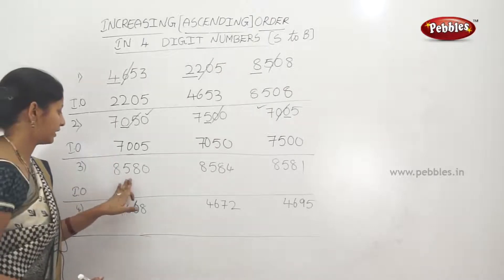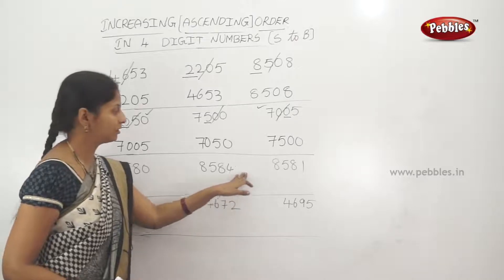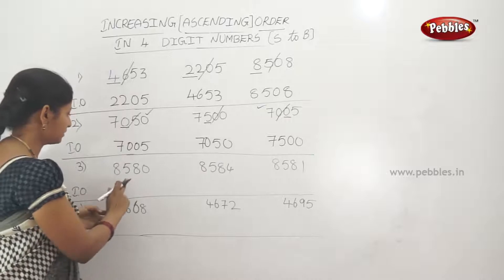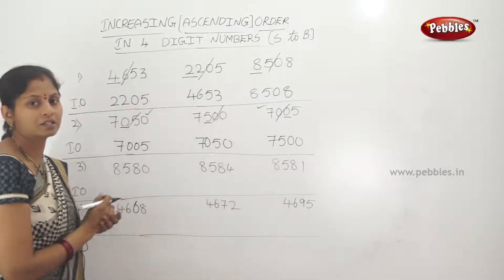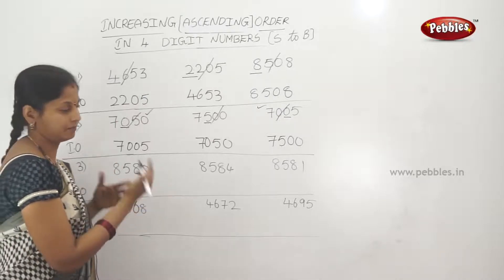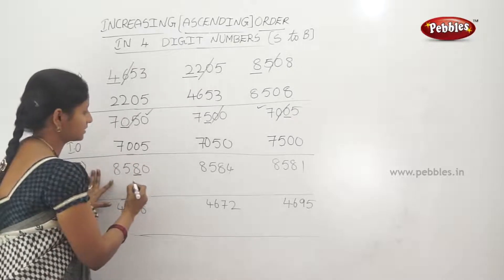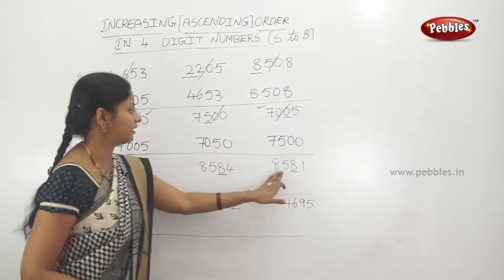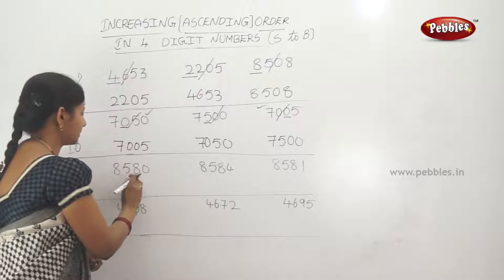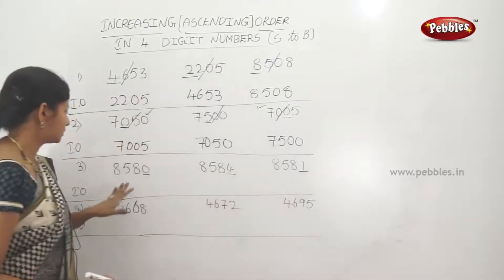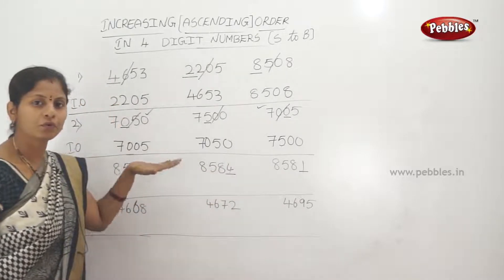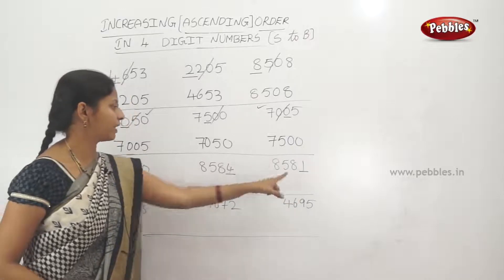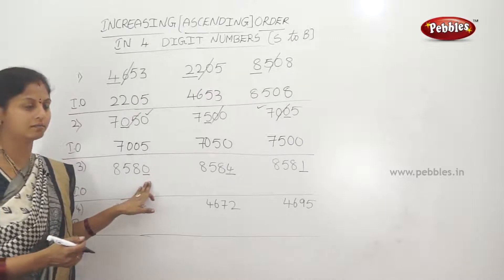One more example: 8,580; 8,584; 8,581. First digit 8, 8, 8 — same. Second digit 5, 5, 5 — also same. Third digit 8, 8, 8 — same again. So we compare the fourth digits: 0, 4, 1. The smallest fourth digit is 0, so 8,580 is the smallest number.